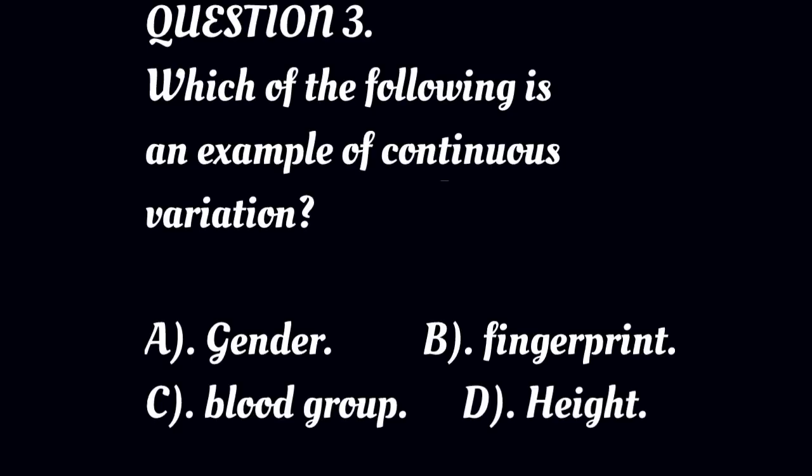Question 3: Which of the following is an example of continuous variation? A: gender, B: fingerprint, C: blood group, D: height.